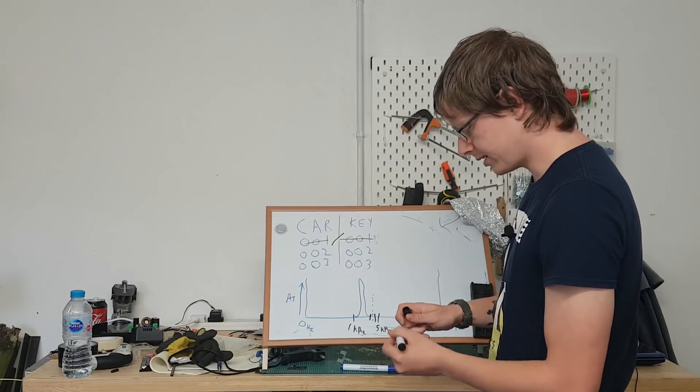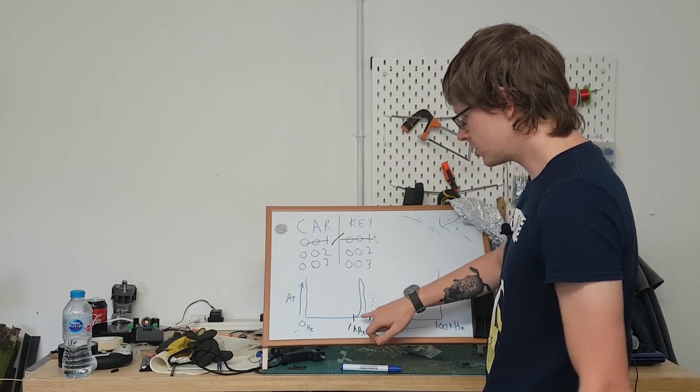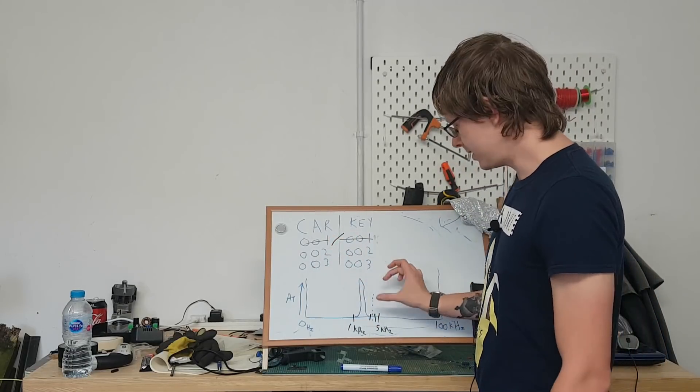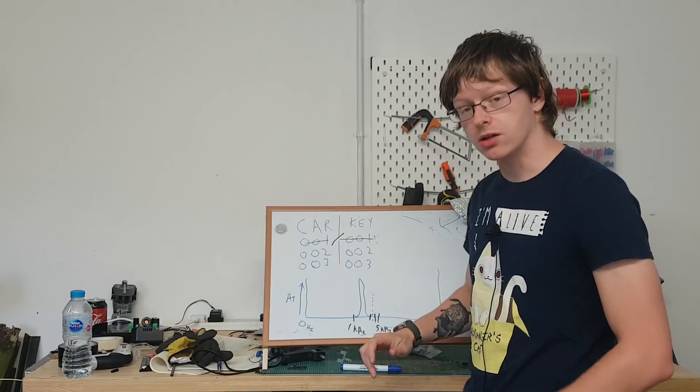You can then capture that signal because your receiver doesn't care whether there's a jamming signal there. It doesn't matter. It's not even going to look at it. And as such, it can then capture that signal almost perfectly.